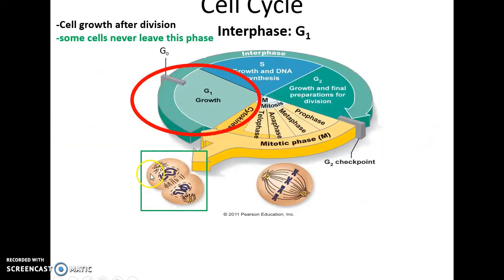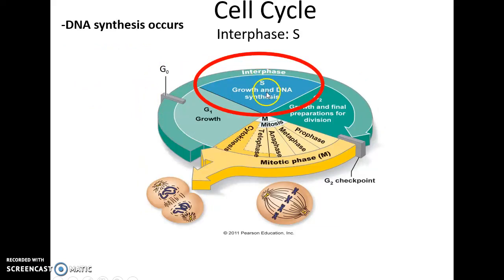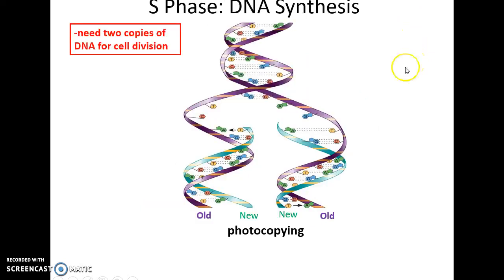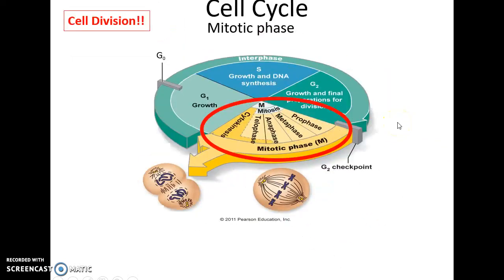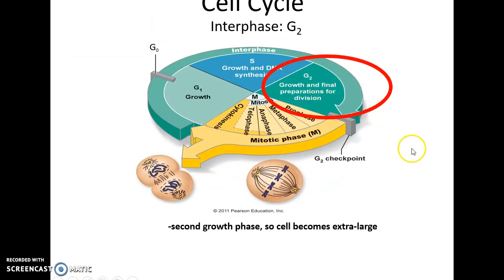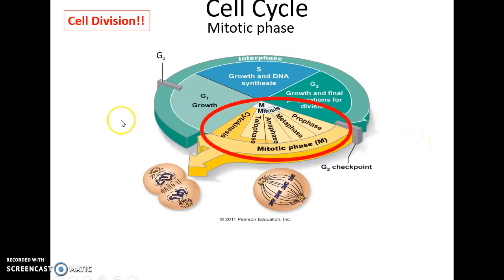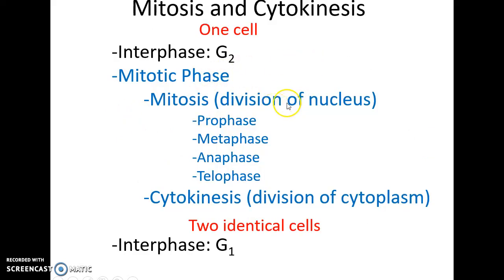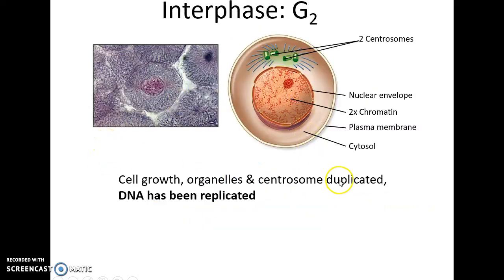During interphase, many cells enter the G1 growth phase, growing from smaller cells to their proper size. Some cells leave the cell cycle and never divide again. Others enter the S phase, where they duplicate their DNA — the double helix splits open and each strand acts as a template for a new strand, giving two copies. Then in G2, cells grow extra large in preparation for division. The mitotic phase includes mitosis (division of the nucleus) and cytokinesis (division of the cytoplasm) to produce two identical cells.